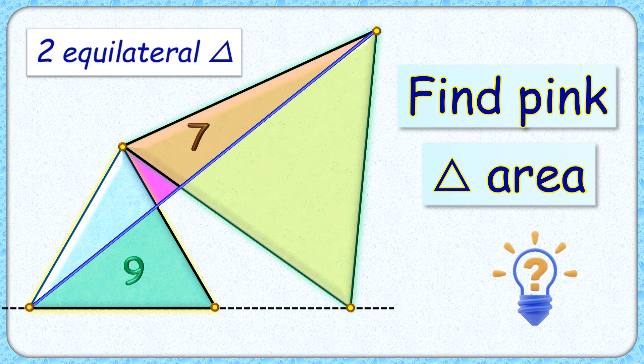Hello everyone, let's discuss this very interesting question. We are given two equilateral triangles that are sharing a common vertex here, and this vertex of the bigger triangle is in line with the base of the smaller equilateral triangle.